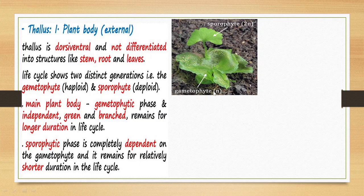The gametophyte is so called because its chromosome number is haploid — it has only one set of chromosomes, denoted as N. The cells of the main plant body, the vegetative structure, will always be haploid. In this structure, gametes are produced. Since the plant body is already haploid, gametes will also be haploid, and there is no need to undergo meiosis or reduction division to produce them.